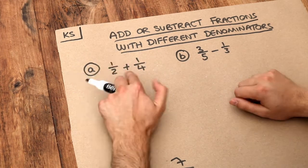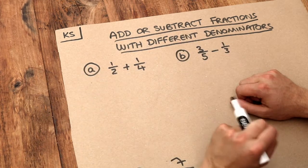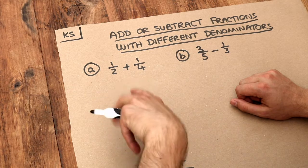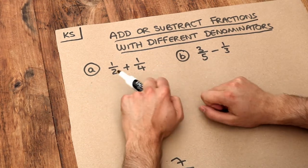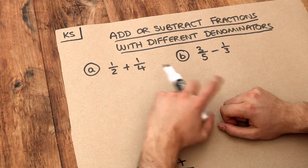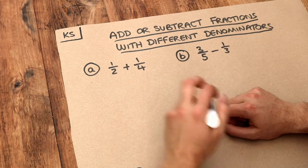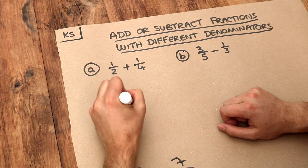Do you remember that whatever we do to the top of a fraction we can do the same to the bottom to keep the fraction the same? What we do is we work out what number does 2 and 4 go into. So what's a common multiple of 2 and 4? Well 2 and 4 both go into 4.